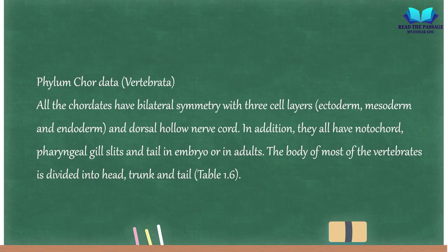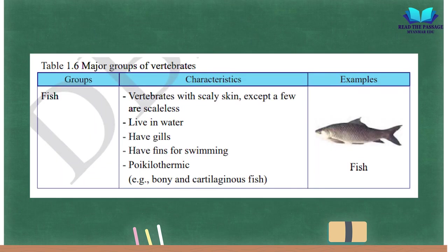Phylum Chordata — Vertebrata. All chordates have bilateral symmetry with three cell layers (ectoderm, mesoderm, and endoderm) and a dorsal hollow nerve cord. In addition, they all have a notochord, pharyngeal gill slits, and a tail in embryo or adults. The body of most vertebrates is divided into head, trunk, and tail (Table 1.6).